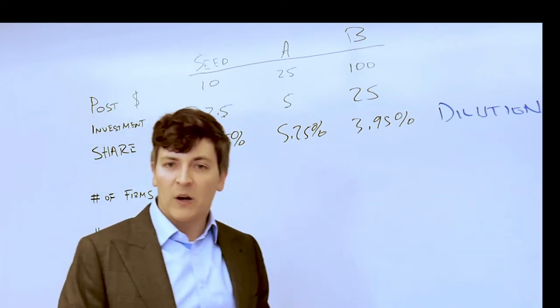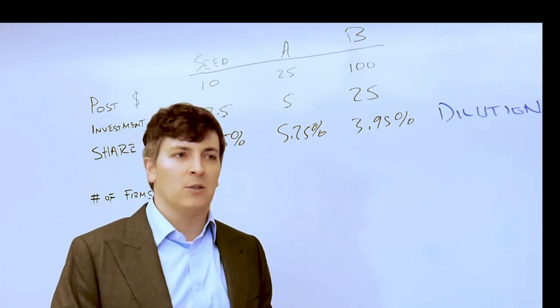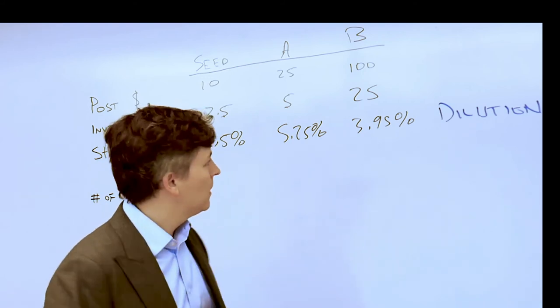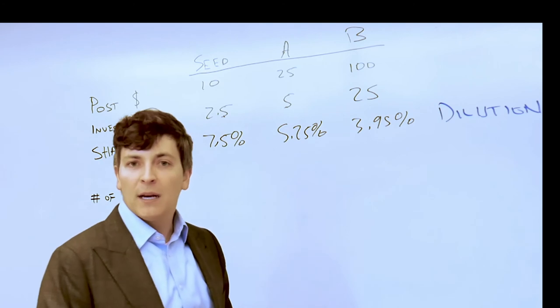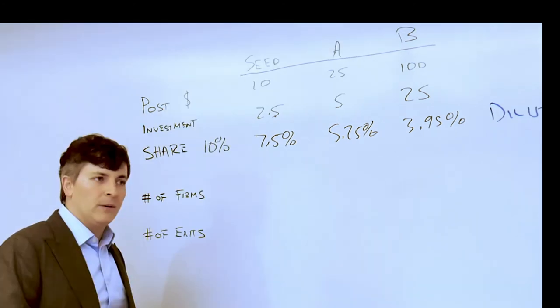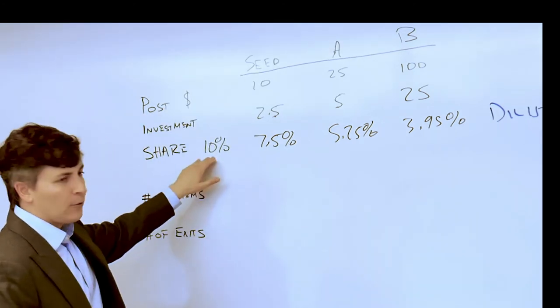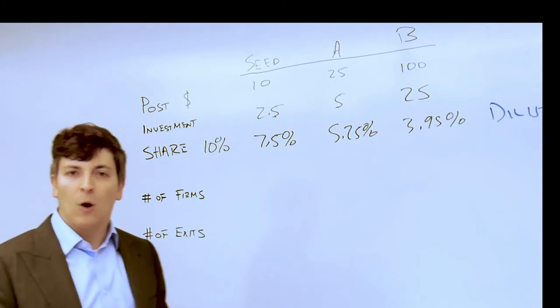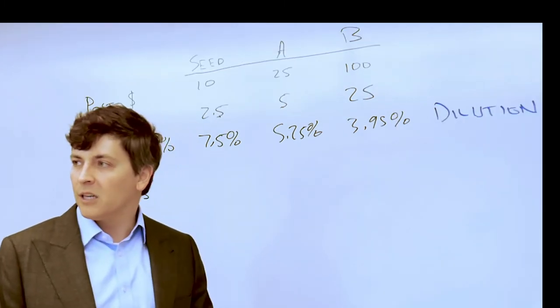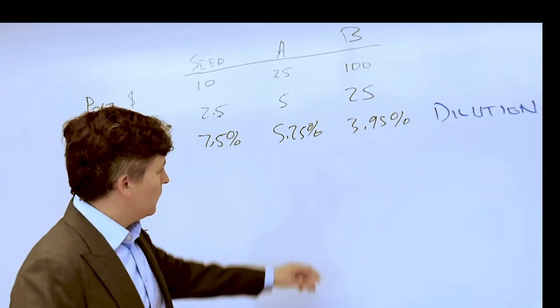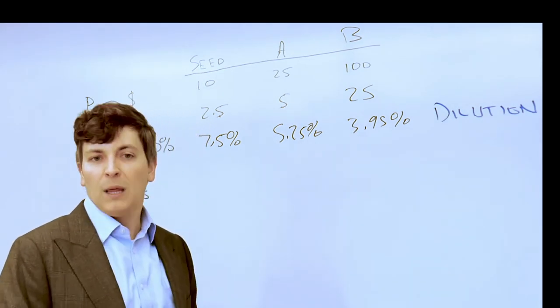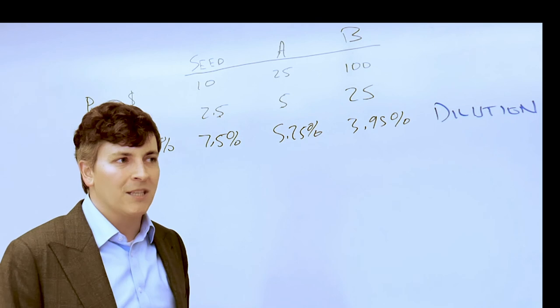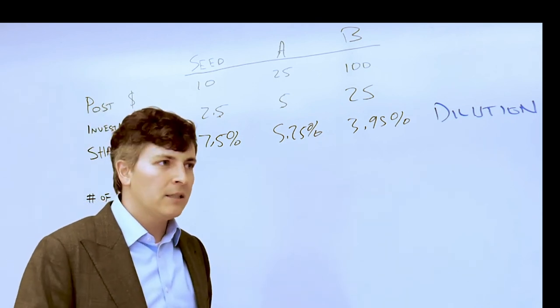So if you're in a very asset-light business that has positive cash flow from the beginning, this investment amount may not be so big and you may not be diluted quite as much. But when a founder offers a joiner or offers you 10% of the early stage equity, you need to take into account that that equity is going to be less than 10% of what was promised after outside investors take a piece of the firm.